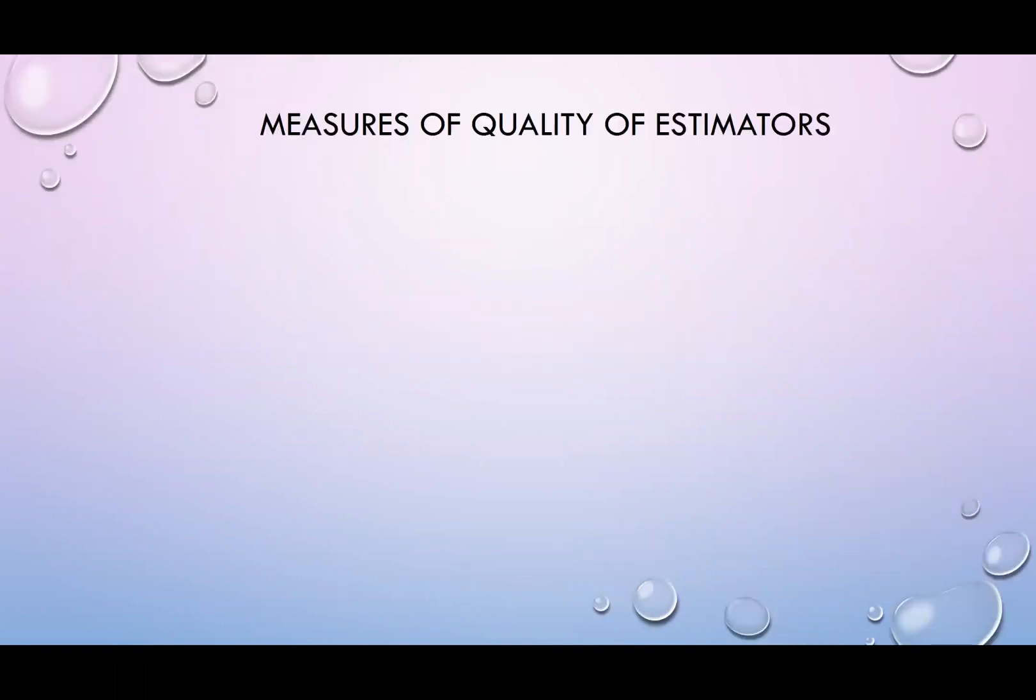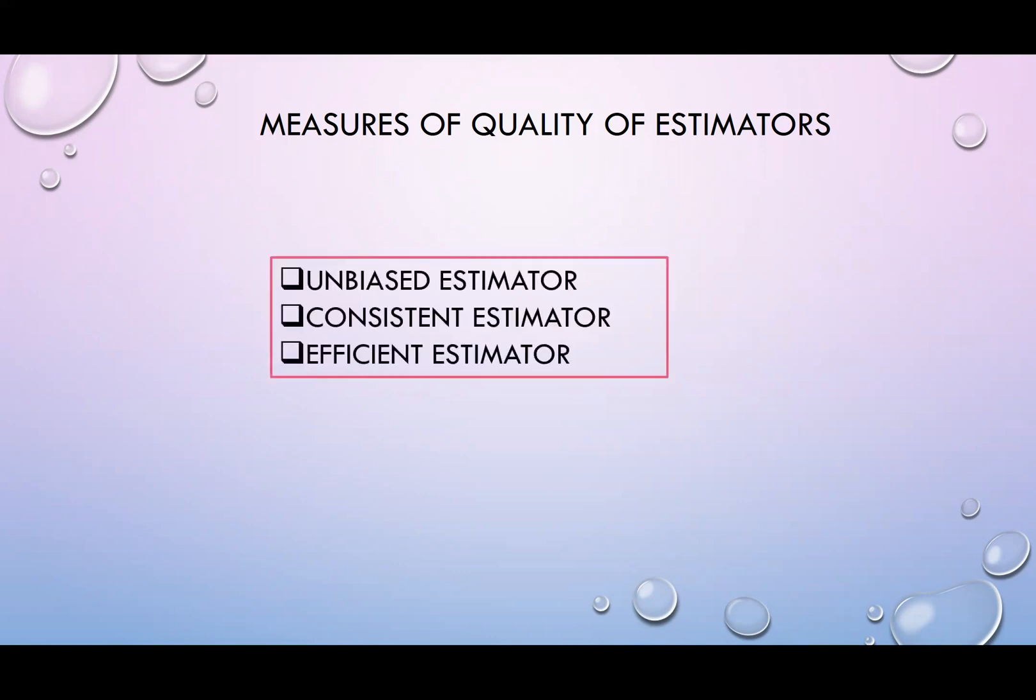Before we proceed with the topic of sufficient statistics, let us revise the concept of estimator. How do you want to determine the quality of estimators? As we learned before, we know that we have three properties. The first one is unbiasedness, consistency, and efficiency.